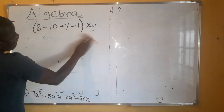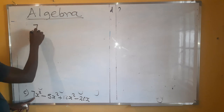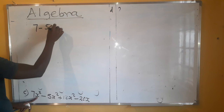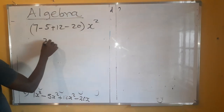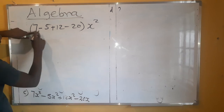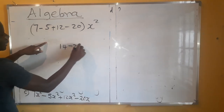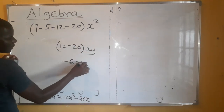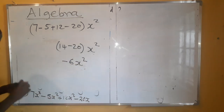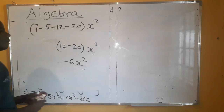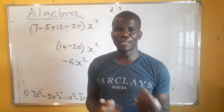Let's do the last one. What is common is x². We have minus 5 plus 12 minus 20 times x². This gives us 2 — when we subtract, we get 2. Then 2 plus 12 is 14, and 14 minus 20 gives us minus 6. So minus 6x² is our answer. That was basically introducing you to the basics of algebra — and if you noticed, the algebra was only in the later part; we were mainly dealing with integers.